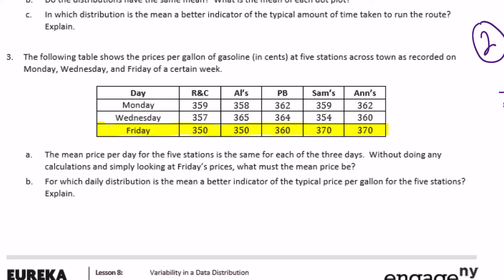Looking at Friday's prices: 350, 350, 360, 370, and 370. The value 360 is right in the middle of 350 and 370, and we have two of each of those, so the mean looks like it's going to be 360 cents because the data is centered on 360.